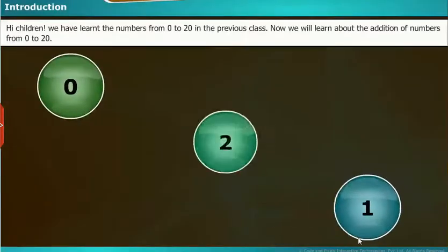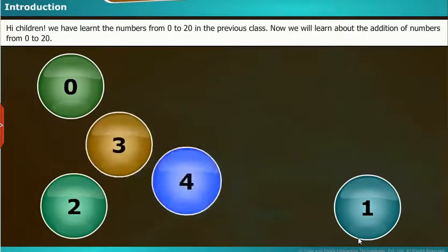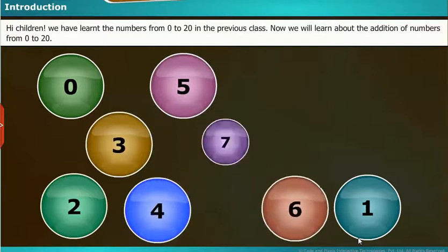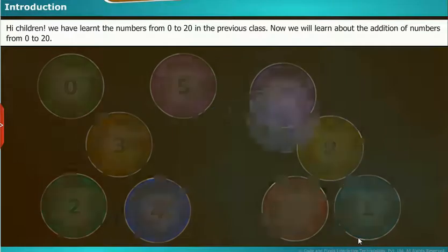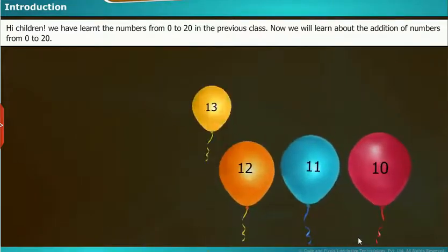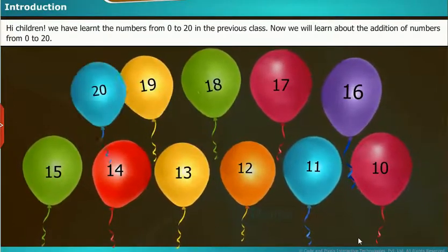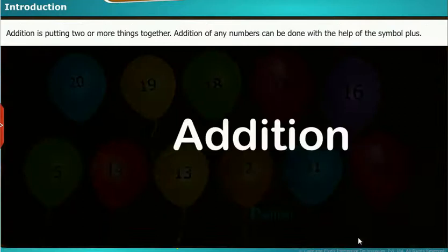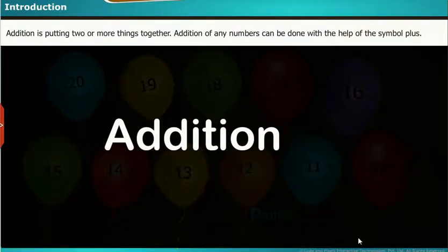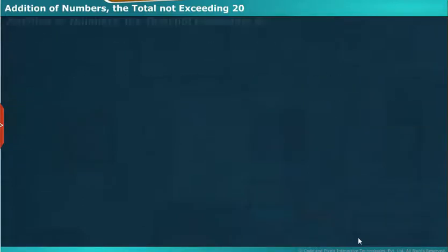Introduction: Hi children, we have learned the numbers from 0 to 20 in the previous class. Now we will learn about the addition of numbers from 0 to 20. Addition is putting two or more things together. Addition of any numbers can be done with the help of this symbol plus.